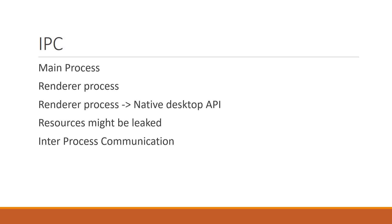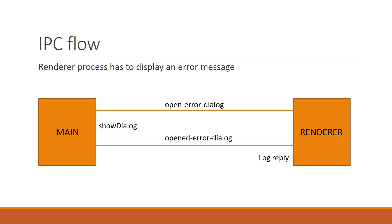Let's see a demo on how to implement IPC in an Electron application. Consider the example where the renderer process has to display an error message in the browser window. The renderer process sends out an event 'open error dialog' to the main process, which should be listening for that event, and when it catches it, it will show the dialog by calling the native API.